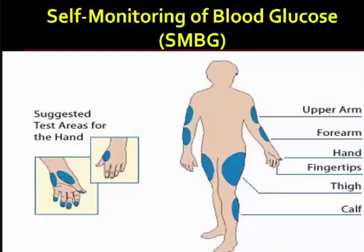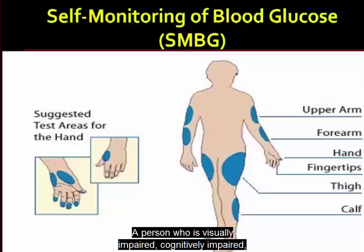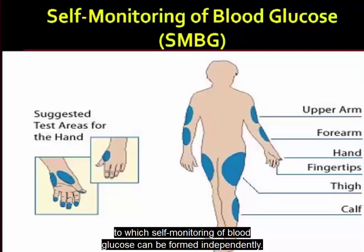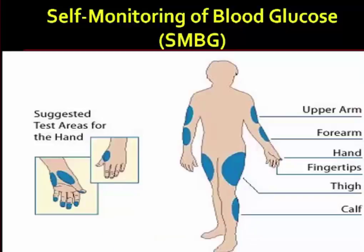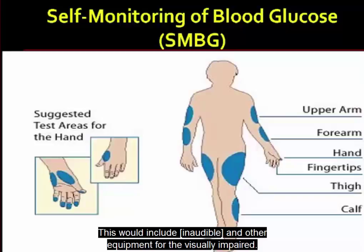A person who is visually impaired, cognitively impaired, or limited in manual dexterity needs careful evaluation of the degree to which self-monitoring of blood glucose can be performed independently. Adaptive devices are available to help patients with certain limitations, including talking meters and other equipment for the visually impaired.